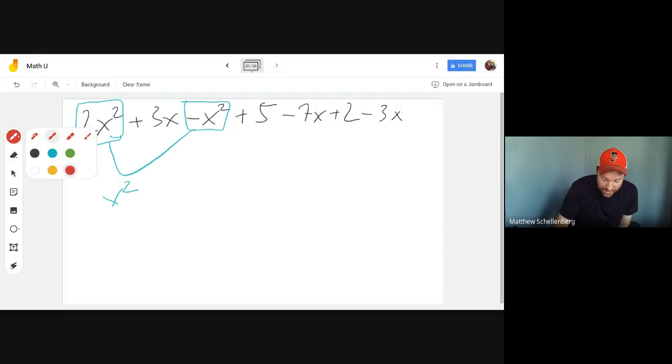Then I'm going to do another one. Now let's say I do underline for this one. 3x minus 7x minus 3x. So that one will just leave me with minus 7x.